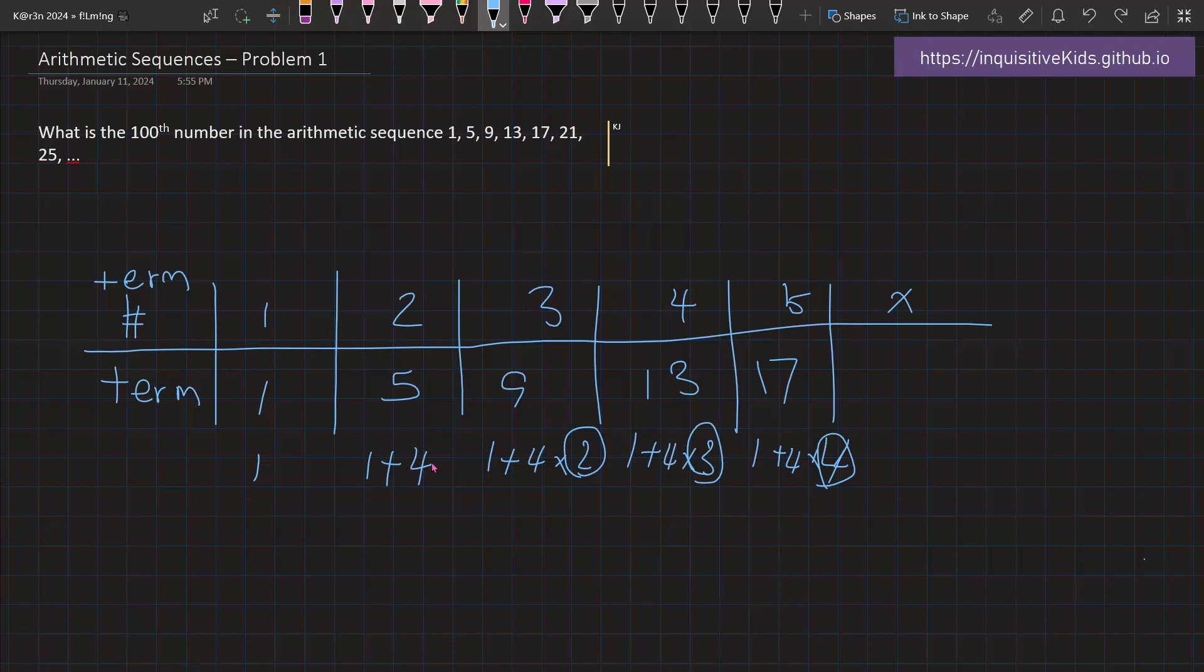Well, we see that this number is always 1 less than the term number. Here, it's really just 1 plus 4 times 1, and it's hidden. And for the first one, it's 1 plus 4 times 0. So we see this pattern coming up multiple times, which means that the expression would be 1 plus 4 times x minus 1. This is the pattern.